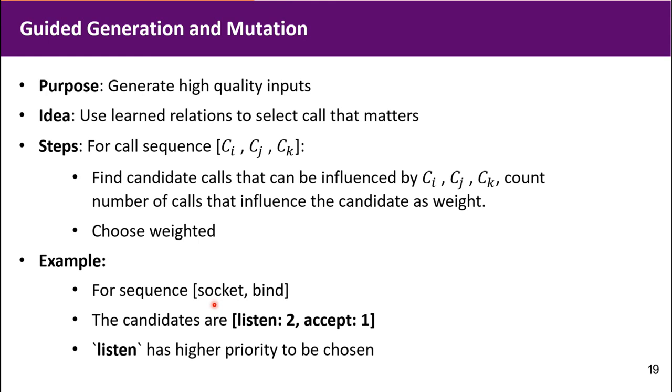Then we choose based on the weight. Here is an example for this sequence. The candidates would be listen and accept. The weight of listen is 2, because both socket and bind can influence execution path of listen. Therefore, listen has a higher priority to be chosen.